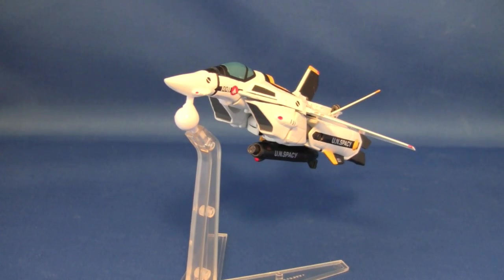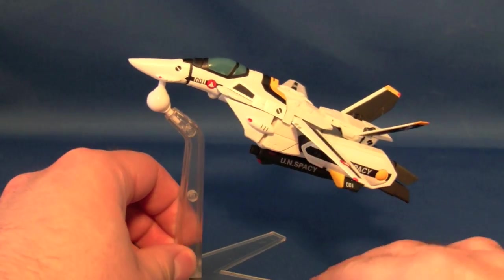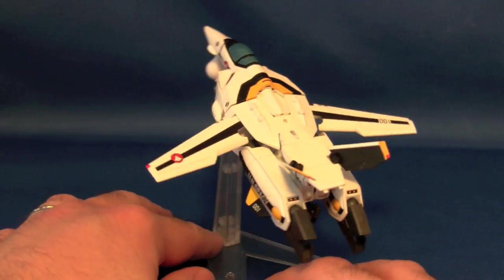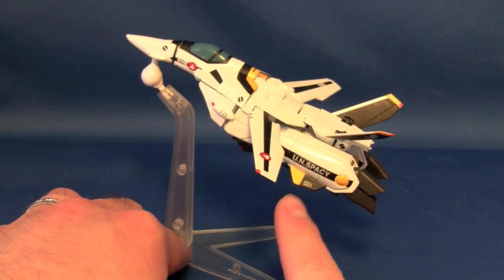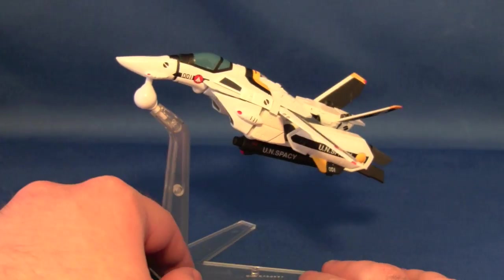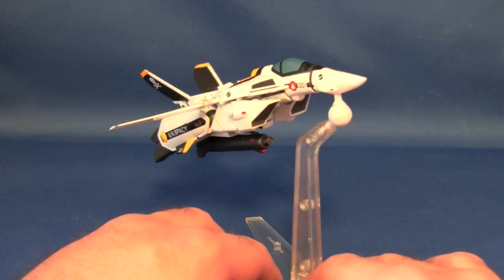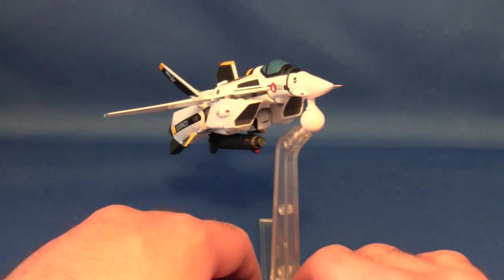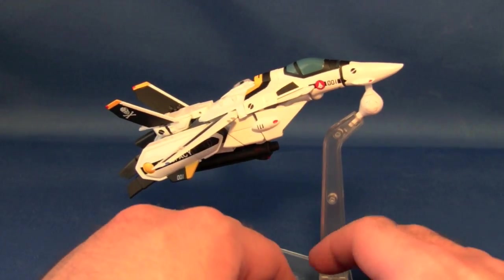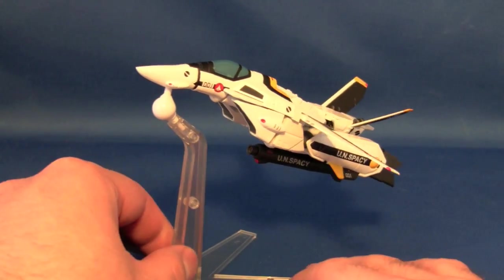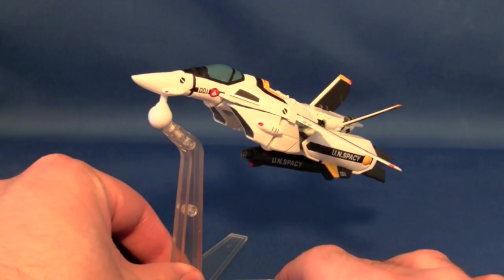Hey gang, Spade here coming at you. This time we are taking a look at the Revoltek Valkyrie VF-1S Transforming Valkyrie. As you can see, it is the Skull Squadron Valkyrie, Skull 1 to be exact. I chose this one over the VF-1J because I just like the Roy Fulker paint job better than the Hikaru paint job.